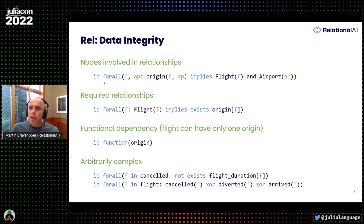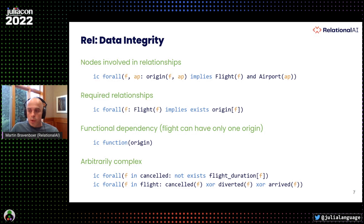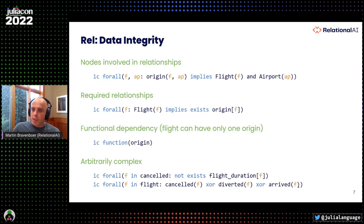We also really care about data integrity. In the same language, you can define integrity constraints that protect your data from getting into a bad shape. For example, you can say an origin relation must be a relationship between flights and airports; a flight has to have an origin — you can't leave from nowhere; a flight has only one origin; a cancelled flight cannot have a flight duration; and a flight has to be either cancelled, diverted, or arrived — no other combination is allowed.